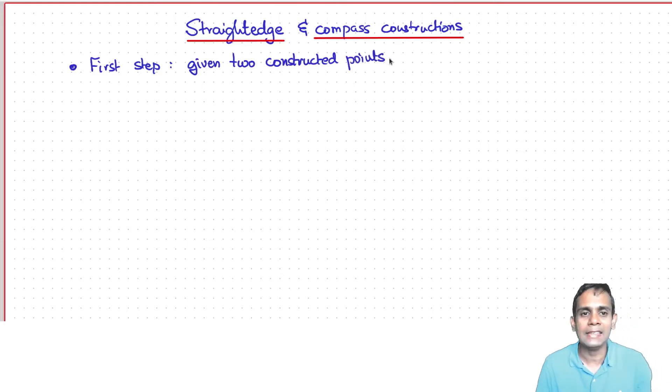Basically at each stage of a construction, you will have a set of objects that are constructed at that stage. And at each new stage, you will construct a new object according to certain rules. The first step you're given two constructed points. So these could just be two points, and usually we denote them by O and A. And the understanding is that the distance between these two points is one unit.